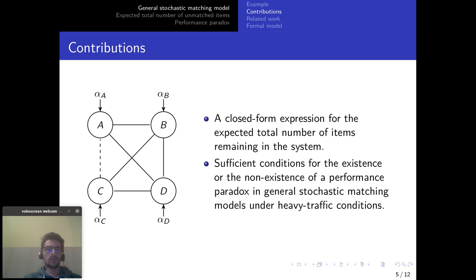Because we have observed that in certain conditions the performance will be actually worse, which is kind of a paradox because our intuition is that because we are adding an edge the model is more flexible, we have more available matchings at all times and so we should have a better performance. But in some cases it's not the case.